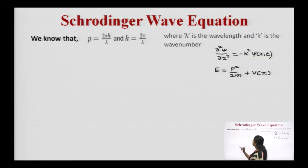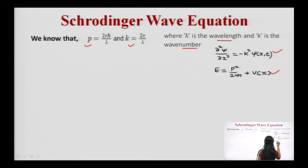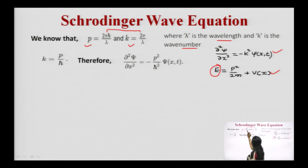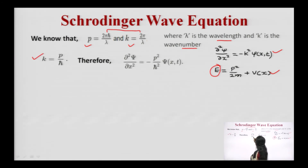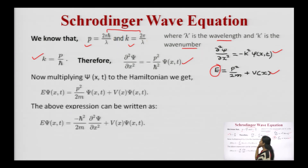We know that p = ℏk (since p = h/λ and k = 2π/λ, so p = ℏk, giving k = p/ℏ). Therefore, substituting into ∂²ψ/∂x² = −k²ψ(x,t), we get ∂²ψ/∂x² = −(p/ℏ)² ψ(x,t). Multiplying the energy equation E = p²/(2m) + V(x) by ψ(x,t), we obtain: [p²/(2m)] ψ(x,t) + V(x)ψ(x,t) = Eψ(x,t).